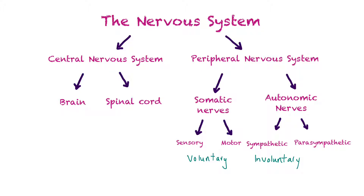The nervous system is broken down into the central nervous system, the CNS, which consists of the brain and the spinal cord, and the peripheral nervous system, which consists of the nerves that extend to and from the central nervous system from the muscles and organs of our body.